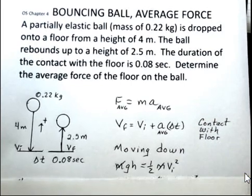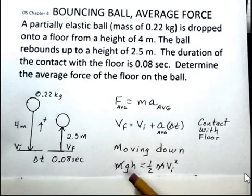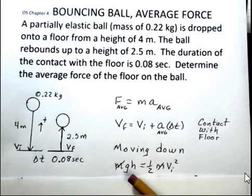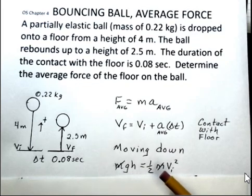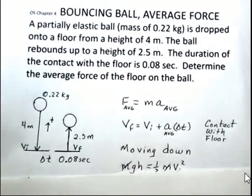So moving down, we have a ball starting 4 meters above the floor. It has a potential energy. Just at the instant before contact with the floor occurs, the ball will have kinetic energy. We will have converted all the potential energy into kinetic energy. So mgh equals 1/2 mv squared. I'm using an energy method to find this velocity. That's not the only way you could find the velocity. You could use the kinematic equations and you'd get the same result.